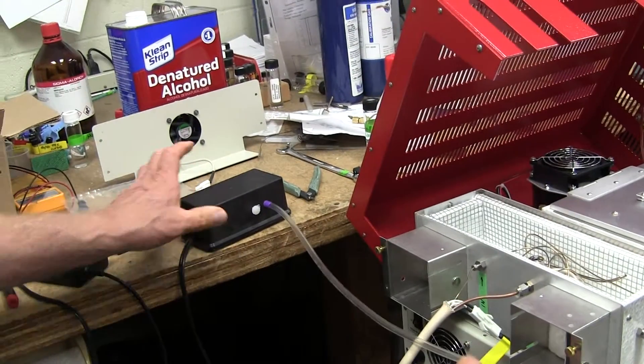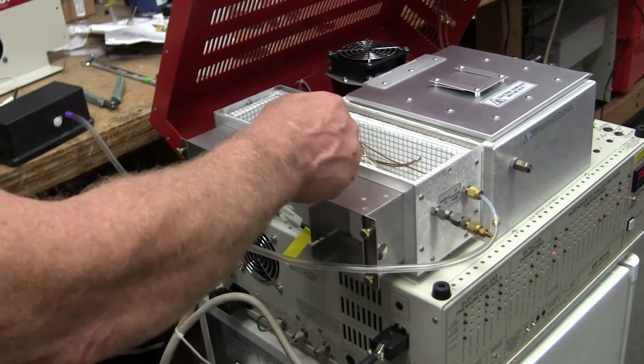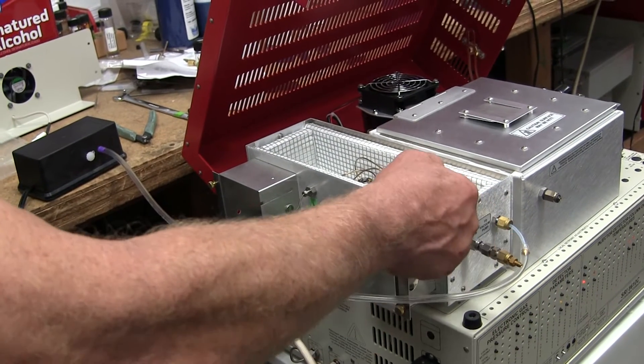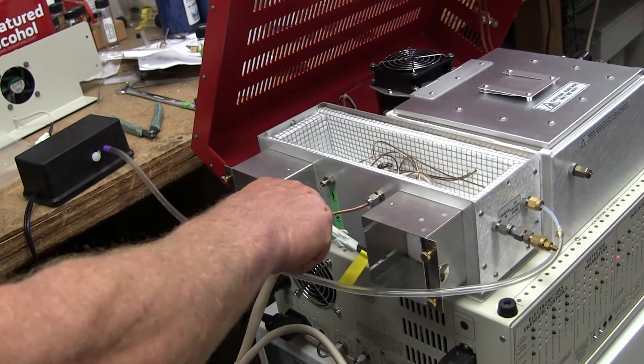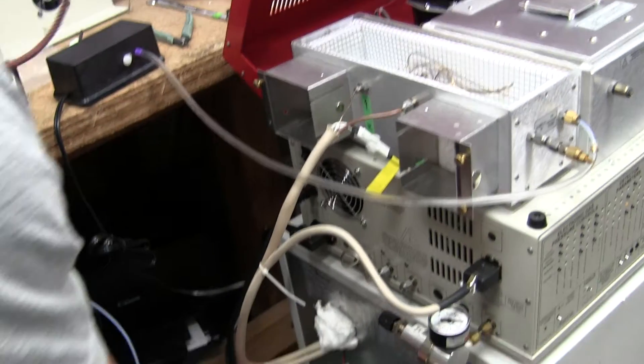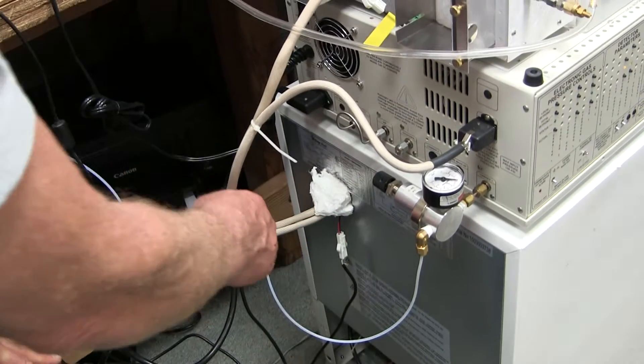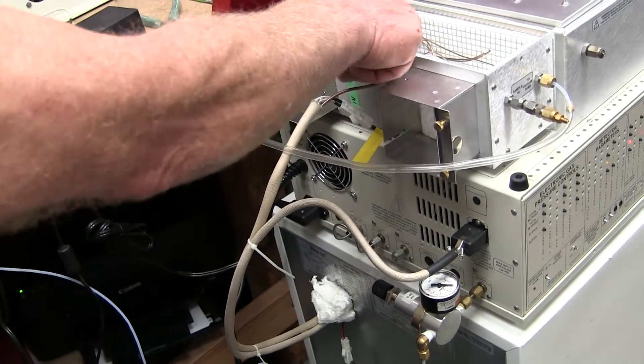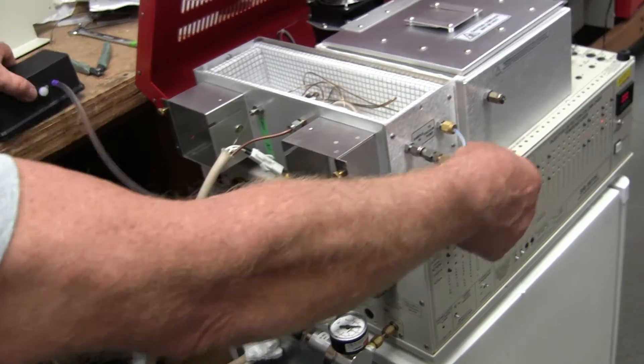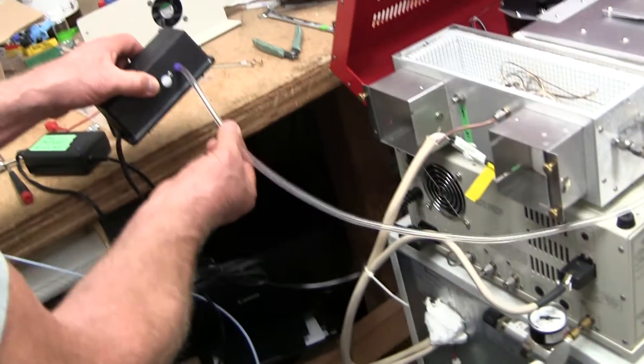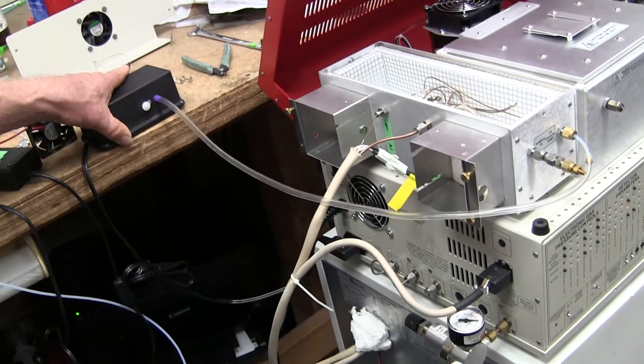The vacuum pump sucks the sample through the trap so that it goes in here through the valve and then down the stainless steel tube to the trap and then comes back to the Valco valve and then to the vacuum pump, which is turned on by the Peak Simple software.